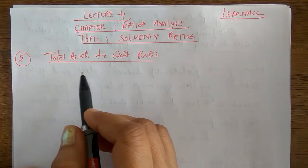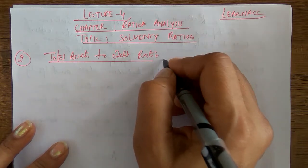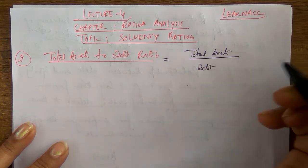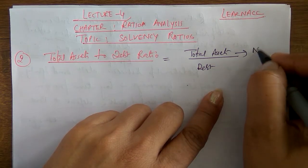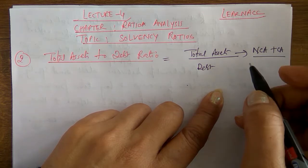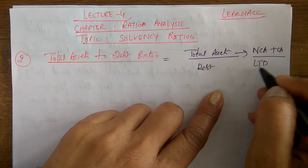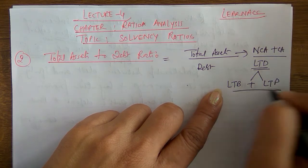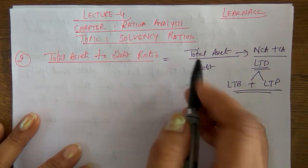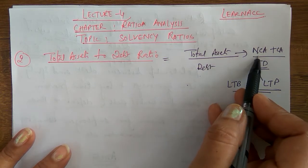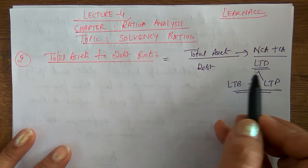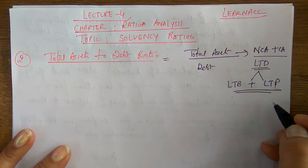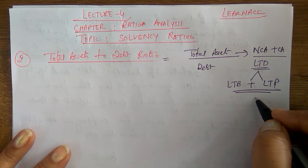Next ratio we have is total asset to debt ratio. For this formula: total assets divided by debt. Total assets include value of non-current assets and current assets. Debt is total long-term debt, which includes long-term borrowings plus long-term provisions. These components were clarified in the first ratio earlier.